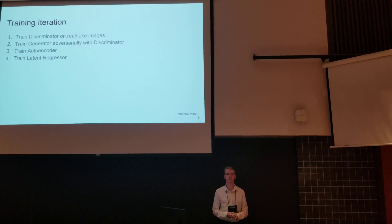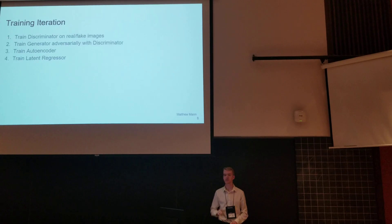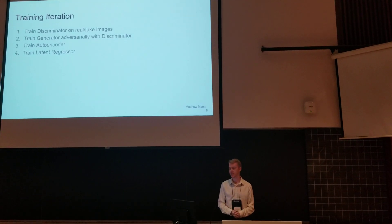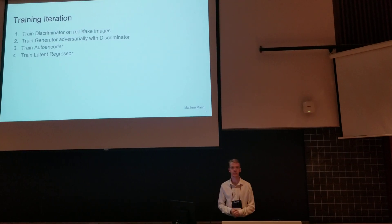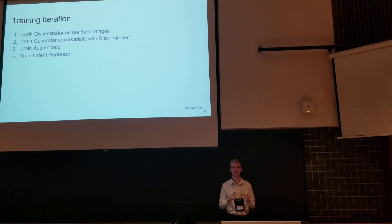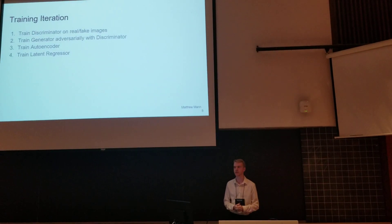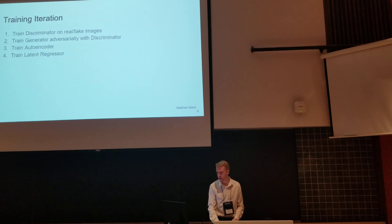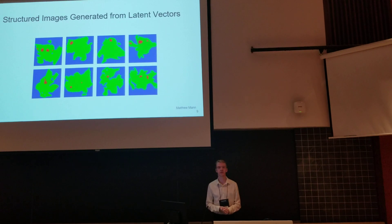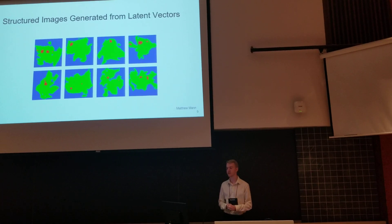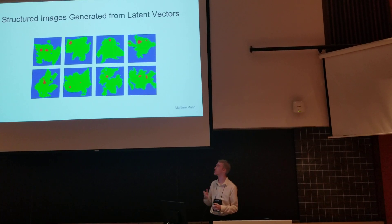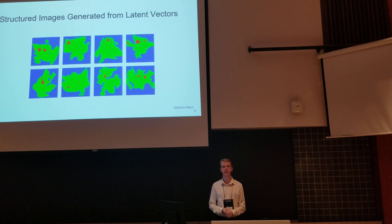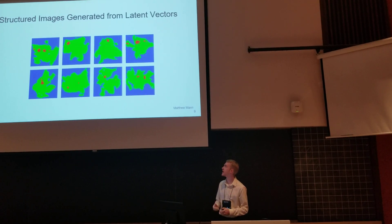Each training iteration consists of four steps: first, train the discriminator on real and fake images; next, train the generator adversarially with the discriminator; then train the two new configurations, the auto-encoder and the latent regressor. Here are eight examples of structured images generated using latent vectors — blue represents the background, green represents the body shape, and red represents the eyes.